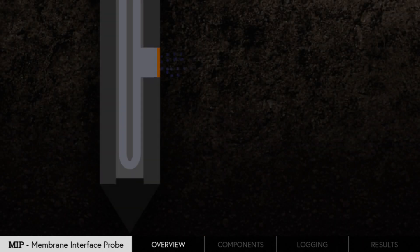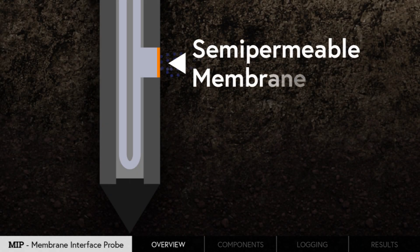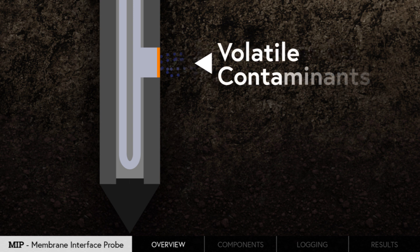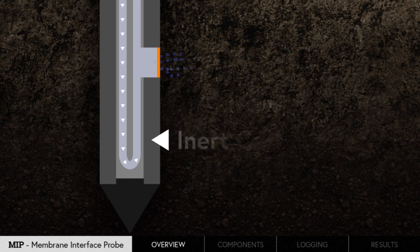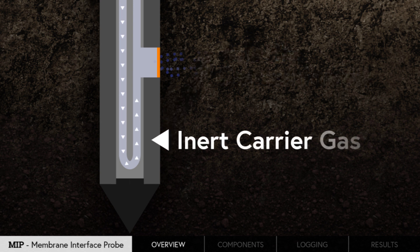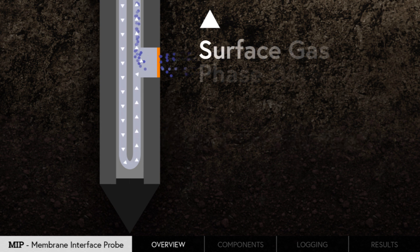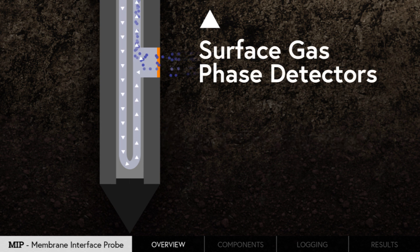The Membrane Interface Probe is named for the semi-permeable membrane located on a heated block on the side of the probe. Volatile contaminants encountered in the subsurface diffuse through the membrane into the probe. An inert carrier gas continuously sweeps the area behind the membrane and transports the volatile compounds through the trunk line to surface gas phase detectors.